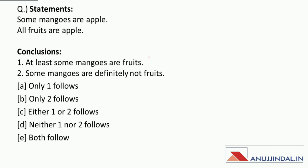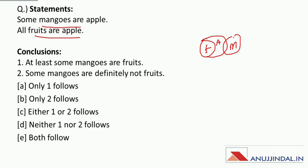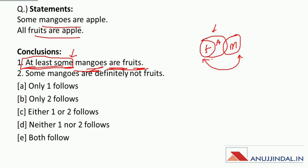Now let's do this question. Some mangoes are apple and all fruits are apple. Let us draw the Venn diagram — all fruits are apple and some mangoes are apple. Now conclusion number one is: at least some mangoes are fruits. At least some ka matlab 'some' hi hota hai — don't get confused. It means definitely some mangoes are fruits — it is a definite statement about mangoes and fruits. Between mango and fruit there is no direct relation, so we can't say about this — it will be incorrect. Next: some mangoes are definitely not fruits — again a definite statement with no direct relation — also incorrect.